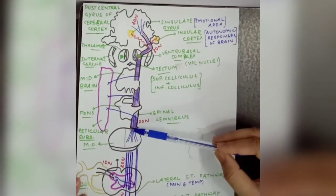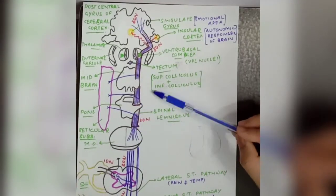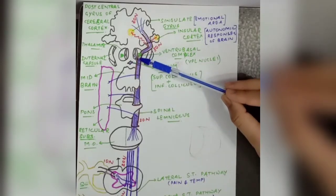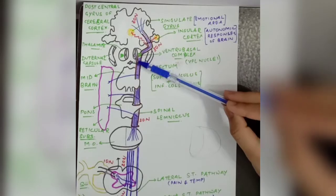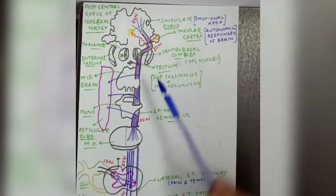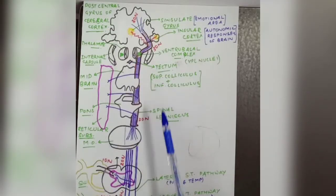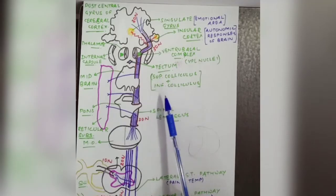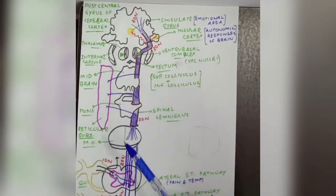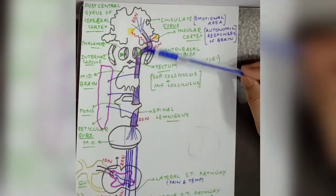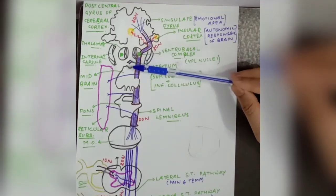The spinal lemniscus ascends from the medulla oblongata to the midbrain, and from the midbrain toward the thalamus. Before reaching the thalamus, the spinotectal pathway will terminate into the tectum. The tectum is present in the back portion of the midbrain, where the superior colliculus and inferior colliculus are formed. So the spinotectal pathway ends at the tectum of the midbrain.